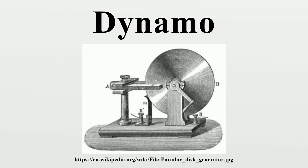The dynamo machine consists of a stationary structure providing the magnetic field, and a set of rotating windings which turn within that field. On larger machines the constant magnetic field is provided by one or more electromagnets, usually called field coils. Zénobe Gramme reinvented Pacinotti's design in 1871 when designing the first commercial power plant operated in Paris. By filling the space occupied by the magnetic field with heavy iron cores and minimizing air gaps between stationary and rotating parts, the Gramme dynamo was one of the first machines to generate commercial quantities of power for industry. The basic concept of a spinning endless loop of wire remains at the heart of all modern dynamos.